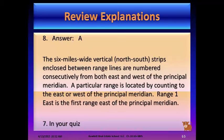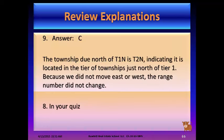Question 8 (your 7), answer A: the 6-miles-wide vertical north-south strips enclosed between range lines are numbered consecutively from both east and west of the principal meridian. A particular range is located by counting east or west of the principal meridian — Range 1 East is the first range east of the principal meridian.